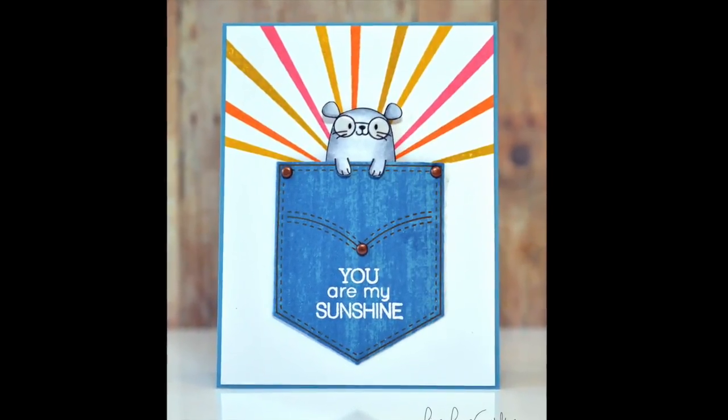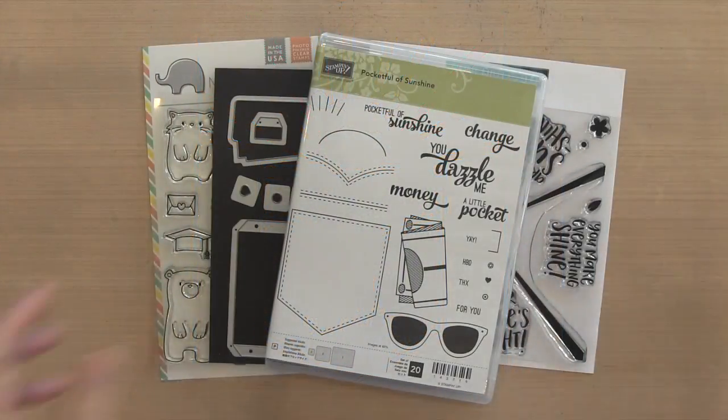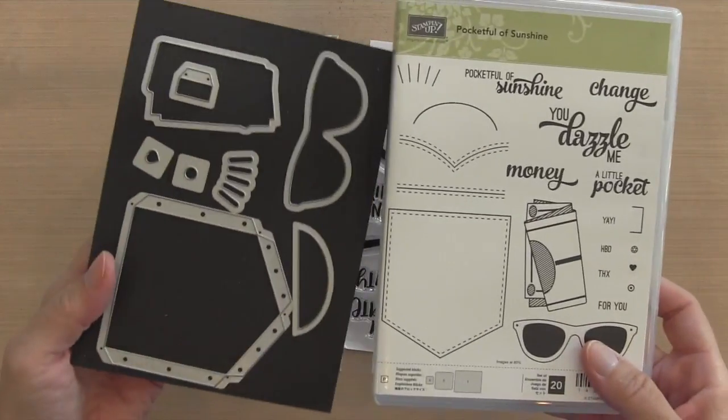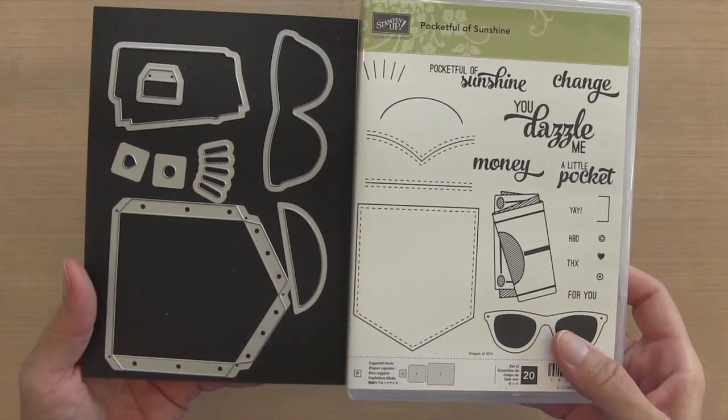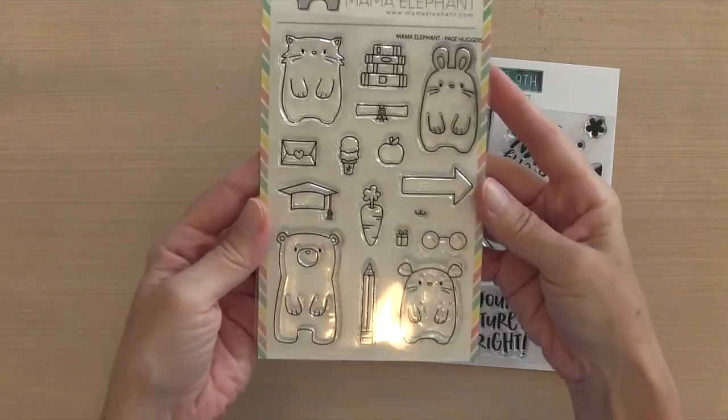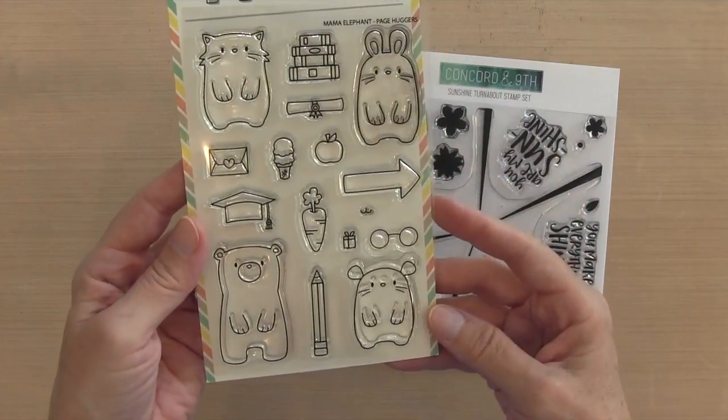Hi everyone, it's Darlene. Welcome back for another card video. Today's card is a really cute card. I'm using this pocketful of sunshine set with the matching dies from Stampin' Up. And I'm also using the Page Huggers by Mama Elephant. I've been meaning to use these two sets together for a while.